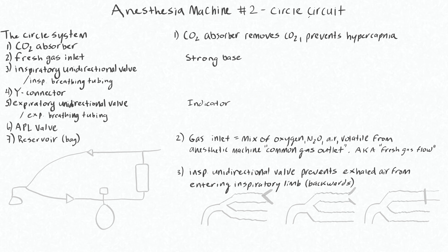The circle circuit is used in the modern anesthesia machine — a great design that allows us to essentially recycle gas through a circuit rather than constantly relying on a steady stream of fresh gas flow. This circuit allows us to reuse gas and eliminate CO2. We have a source of fresh gas flow into this circuit, but because it recycles all the air, we only have to add as much air as is eliminated by our CO2 scrubber, used by the patient, or vented off by safety valves.